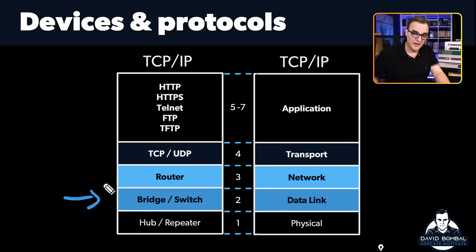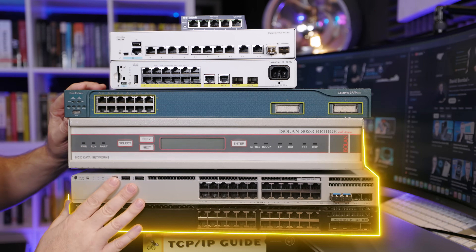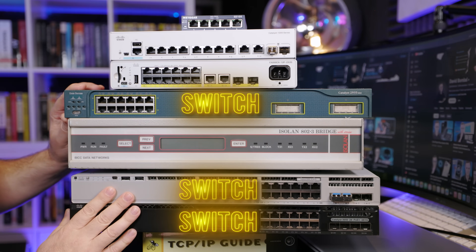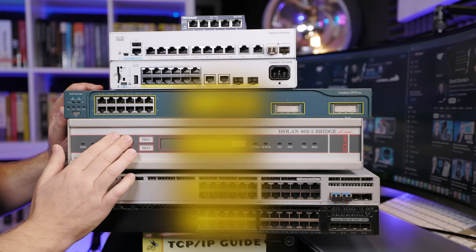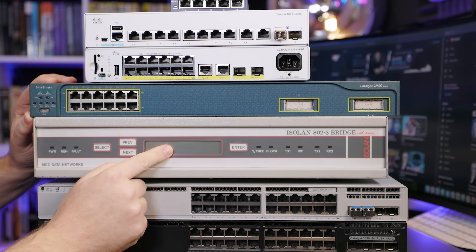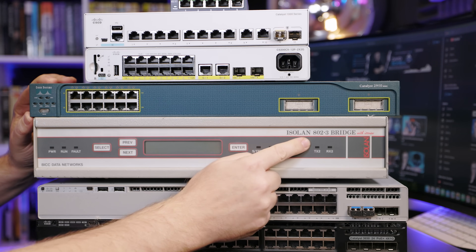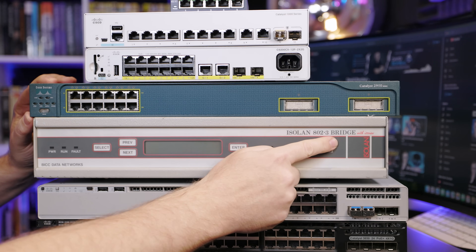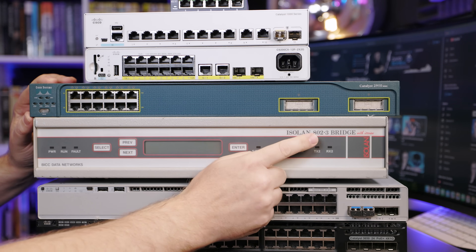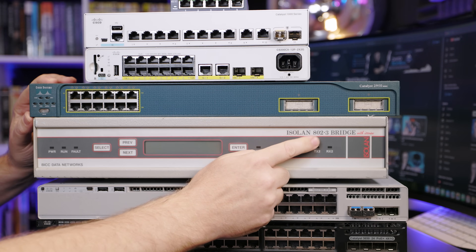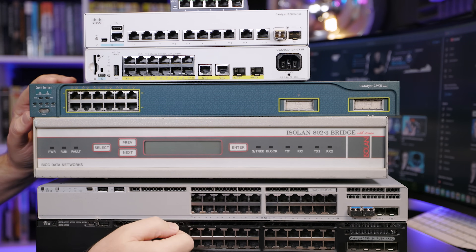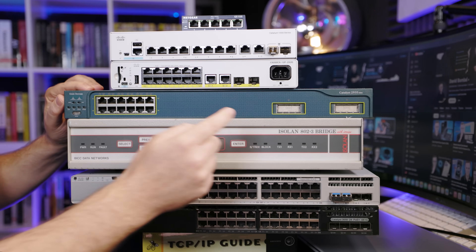You need to understand where devices reside, because many years ago we replaced hubs with switches — switches are much more intelligent and give us better utilization of a network. At layer two, we have bridges and switches. Here are some examples of different switches and a bridge. Here we have an Ethernet bridge — notice it says ISO LAN 802.3 bridge. 802.3 is the standard for Ethernet — a layer two bridge.